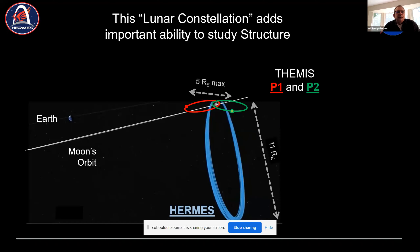This illustrates Earth in the background and the lunar orbit. At the Moon, you see the orbits of the two Themis spacecraft — they're essentially in equatorial orbits with separations ranging from about two to five Earth radii. Gateway is going to be in a polar orbit with apoapsis in the south and periapsis in the north at about 11 Earth radii. This gives us a nice multi-spacecraft constellation. Although the instrumentation on Hermes is not identical to the two Themis spacecraft, it is very similar in many ways.